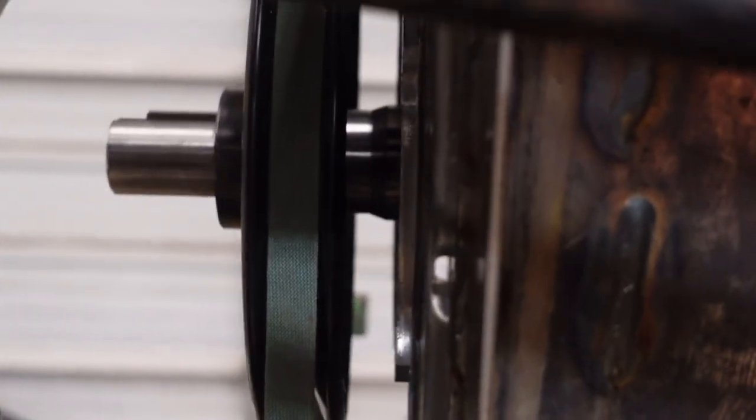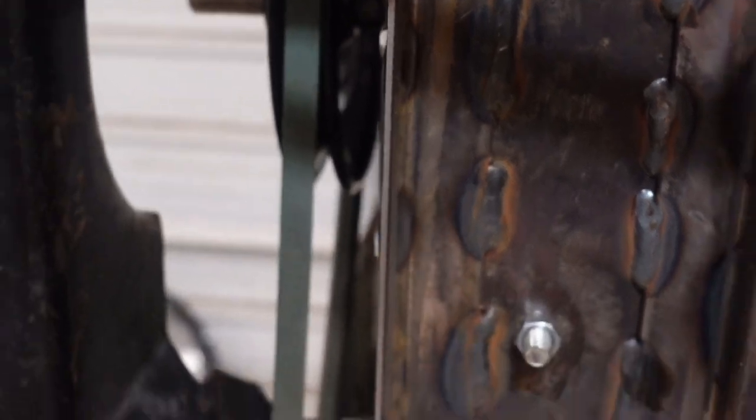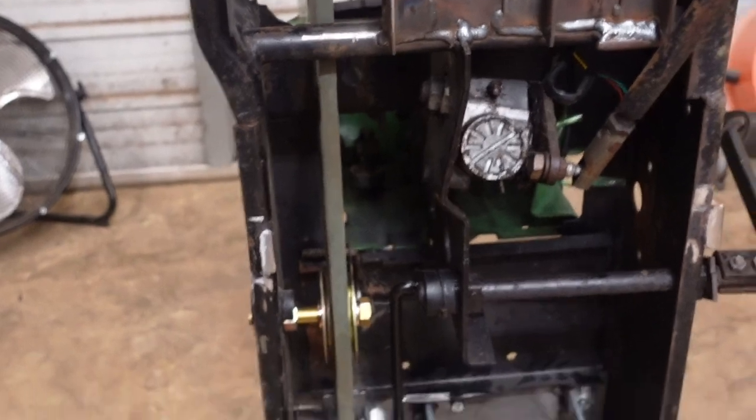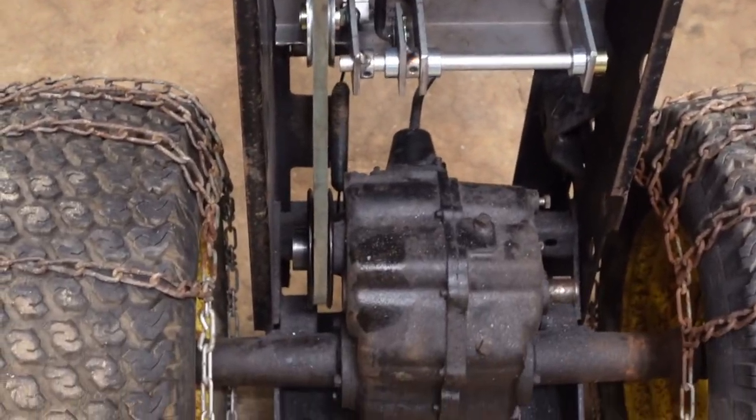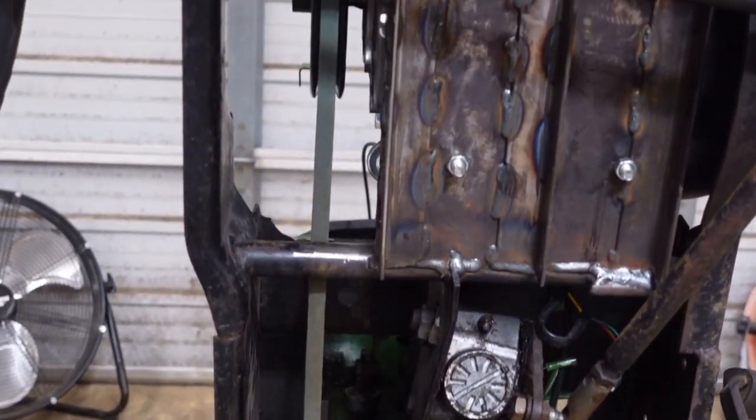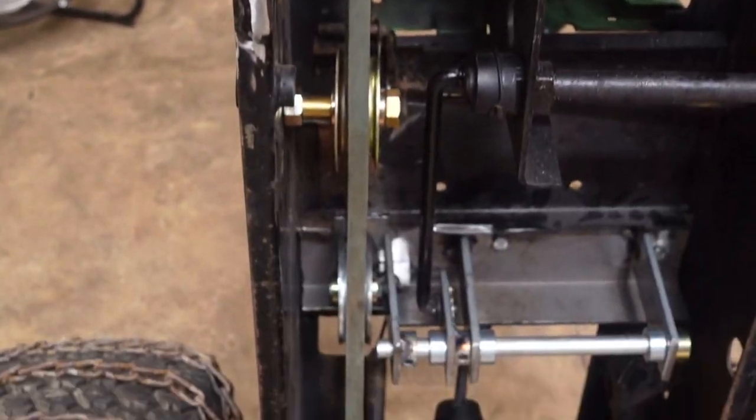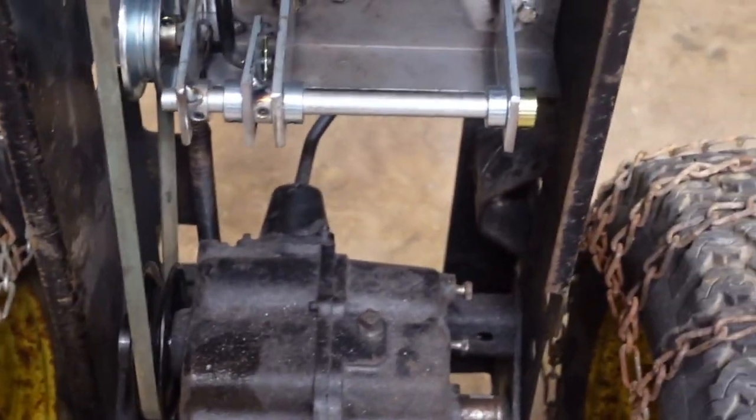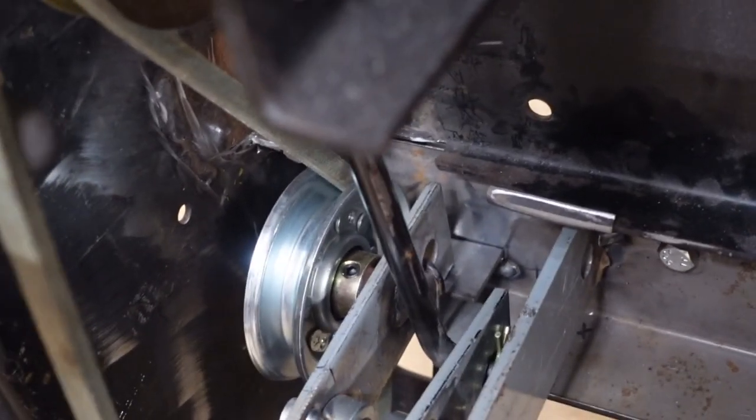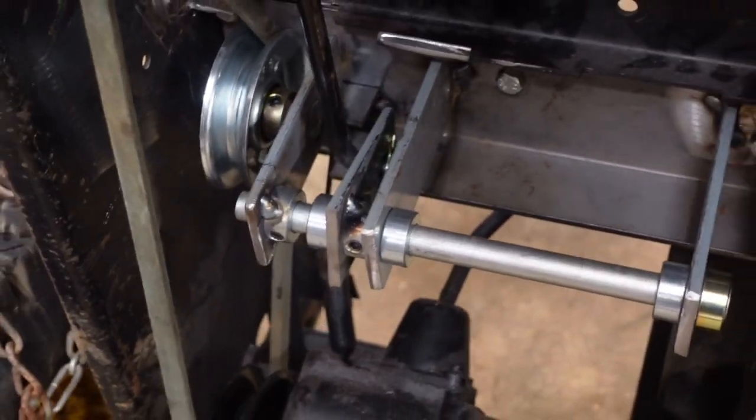And then of course there's the motor. It's really hard to kind of get a full view of this thing, but you can see that the belt system is all straight as an arrow and it's got a good amount of tension already on it.